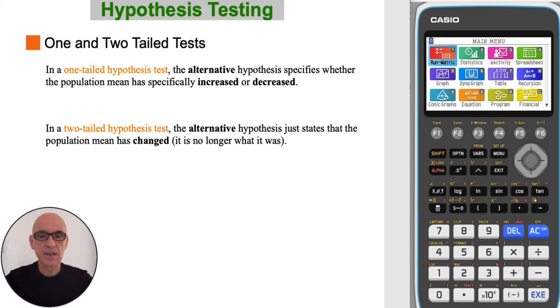In a one-tailed hypothesis test, the alternative hypothesis specifies whether the population mean has specifically increased or decreased. Whereas in a two-tailed hypothesis test, the alternative hypothesis states that the population mean has changed. In other words, it's no longer what it was before.